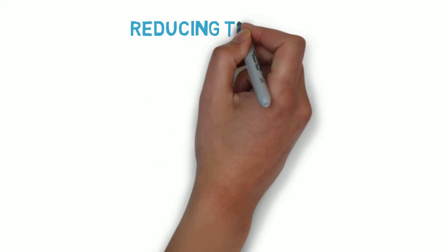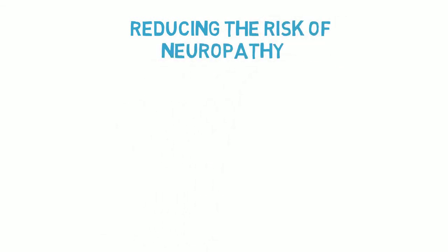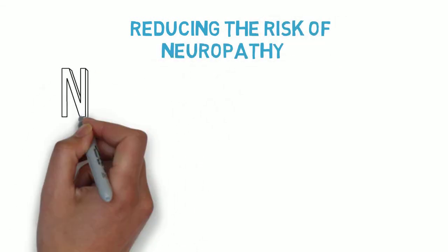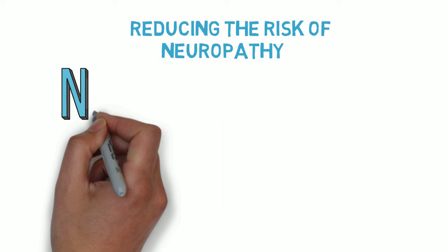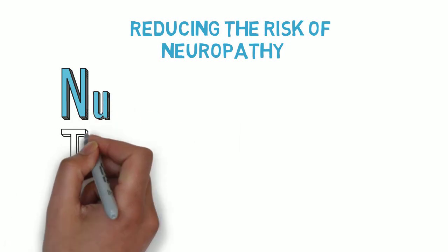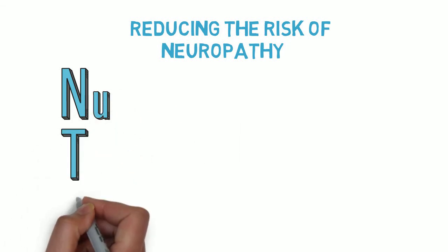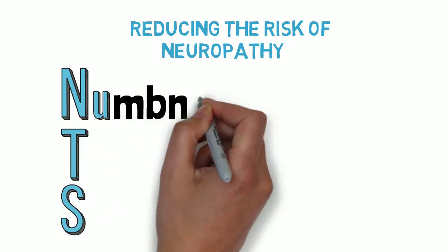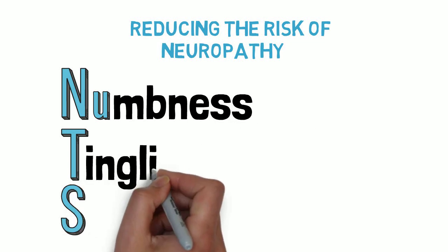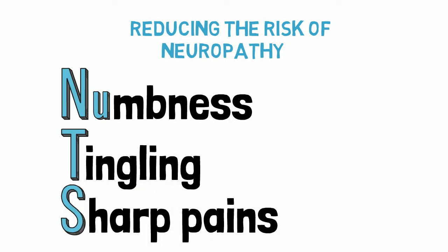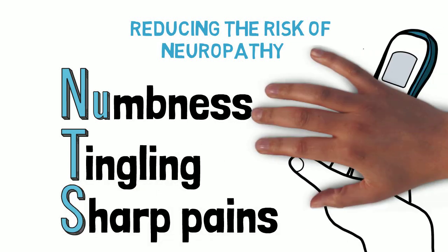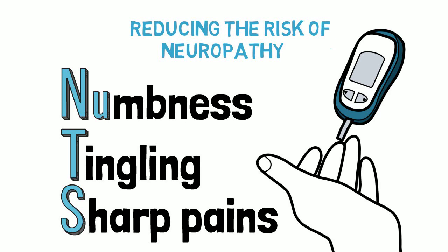It is important that symptoms of neuropathy are detected early to reduce these risks and complications. The early signs of neuropathy can be remembered using the acronym NUTS, which stands for Numbness, Tingling, and Sharp pains. Closely monitoring blood sugar levels and having the feet checked regularly are further ways to reduce the risk of neuropathy and tissue damage.